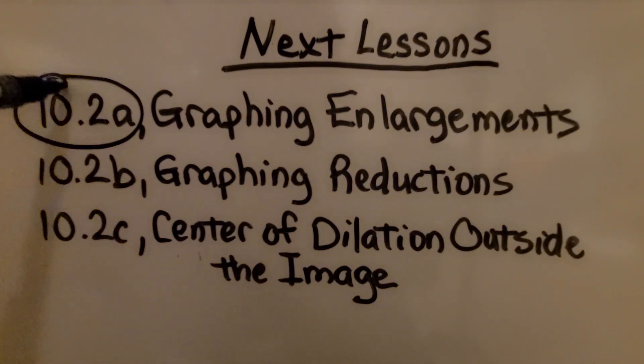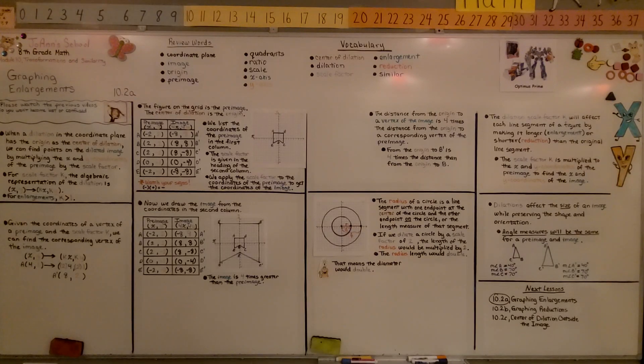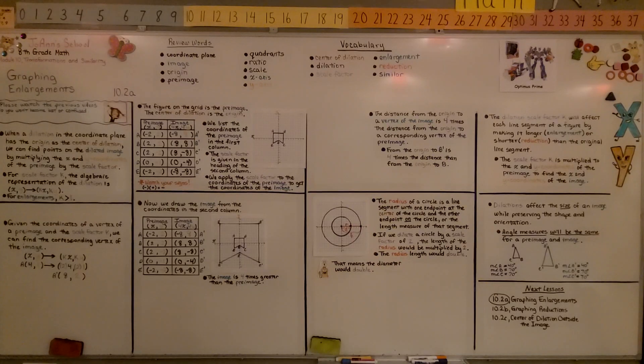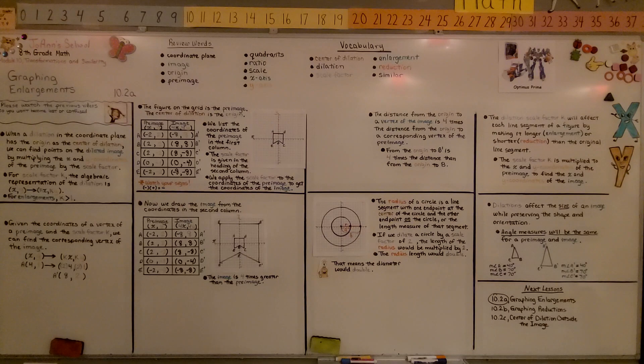We're finished with part A. We're going to move on to the second part B, graphing reductions. So remember, when the scale factor k is greater than 1, we have an enlargement. When it's less than 1, we have a reduction. Have a great day and join me for part 2.